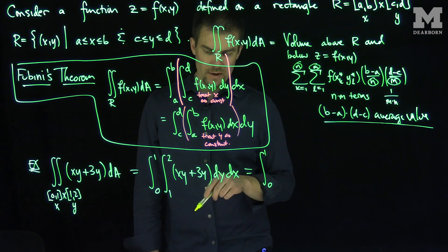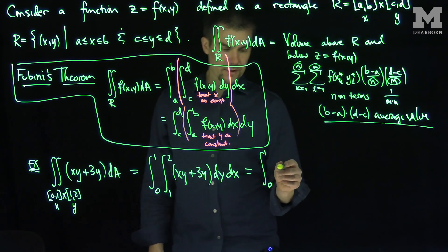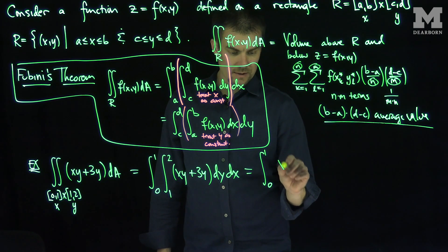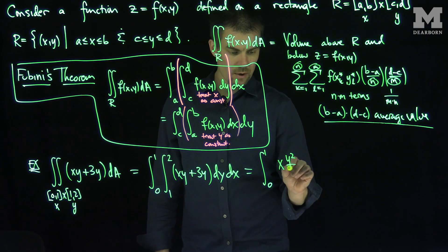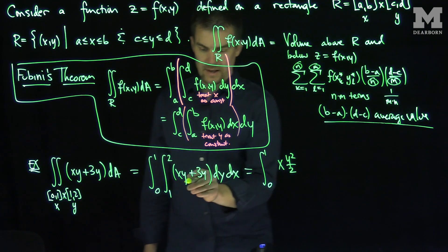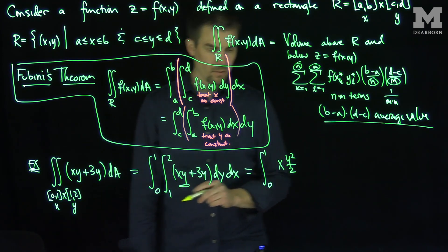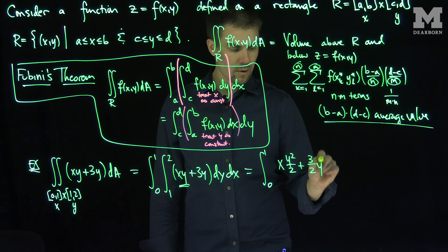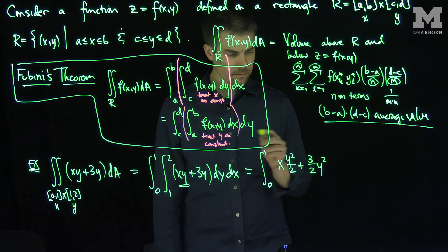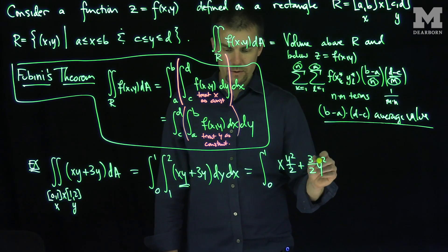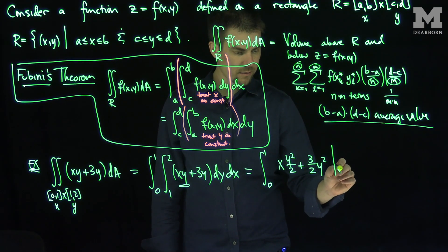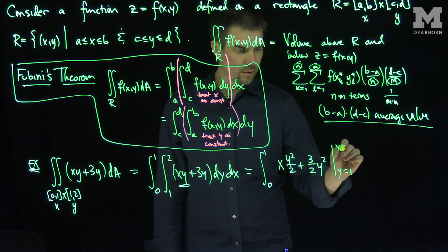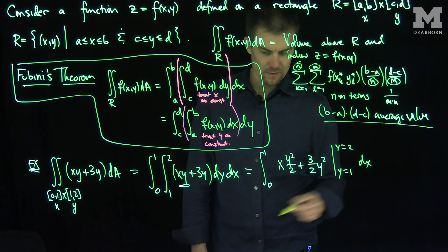So let's do a y integration. This is the integral from 0 to 1, and then I'm going to do a y integral of this. So what we'll have over here is we'll have x times y squared over 2, because that would be the antiderivative of this with respect to y, and then plus 3 over 2 y squared. And then y goes from what to what? Y goes from 1 to 2, and then I have a dx that's left over.